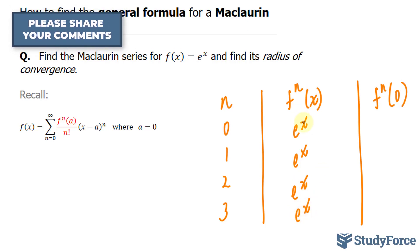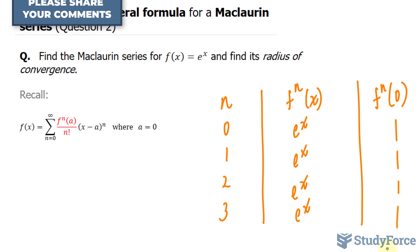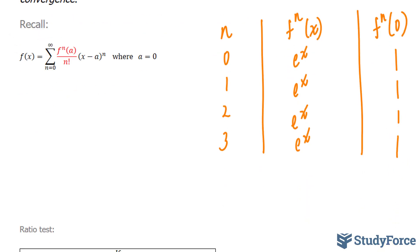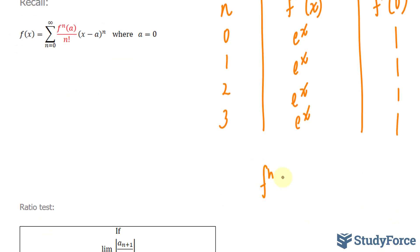Now, substituting x equals 0 into each one of these will give you 1. So coming up with the general formula is actually quite easy. To find out what f sub n at x is equal to, you look at the outputs, and they're all 1. So you don't really need to come up with anything special. It's simply 1.